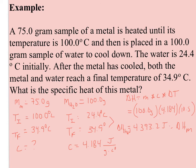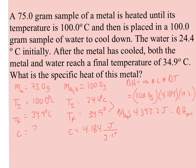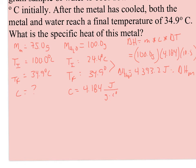So now I can set up a second equation. Again, ΔH = m × C × ΔT. This time I know ΔH is 4,393.2. Now I plug in my values for my metal: 75 gram sample of metal, C is what I want to find. And my temperature change here, if I take 34.9 minus 100, is 65.1.